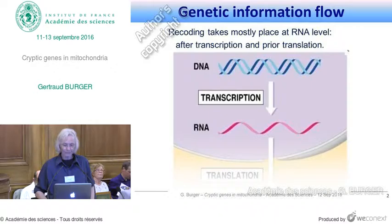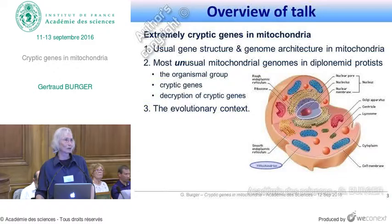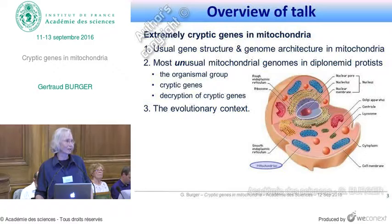To give you an overview of the talk: I'm first introducing or reminding you of the structure of ordinary genes and the structure of ordinary mitochondrial genomes, and then I will talk about the quite unusual mitochondrial genes and genomes in diplonimid protists. They are cryptic genes, and I will tell you what we know today about how these genes are decrypted. At the end, I will briefly present our hypothesis about how all these strange phenomena may have evolved.